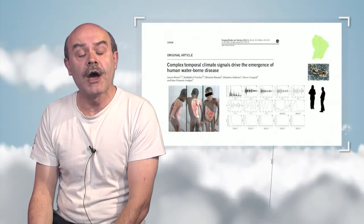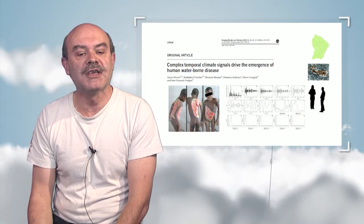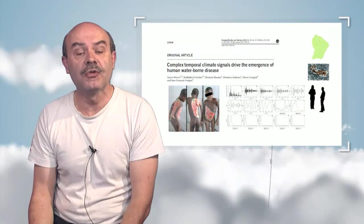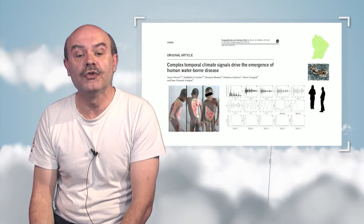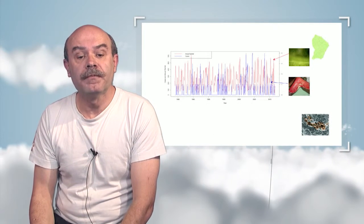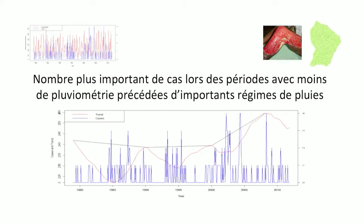Now let us look at a second example — another aquatic bacterium, but one which lives in freshwater ecosystems, especially in French Guiana. This second disease is the Buruli ulcer, as you can see on the picture. We can do exactly the same study: in the blue curve, we have the number of Buruli ulcer cases correlated with a parameter shown in the red curve — the quantity of rainfall in the area.